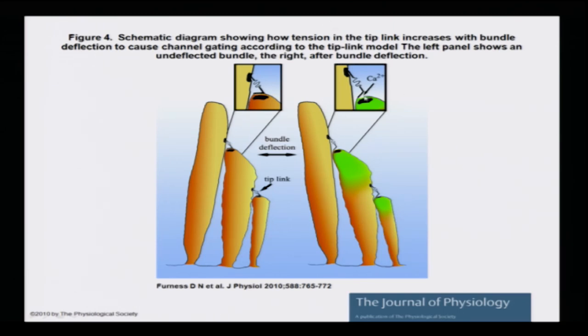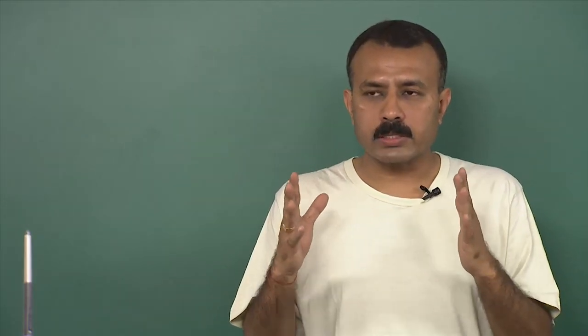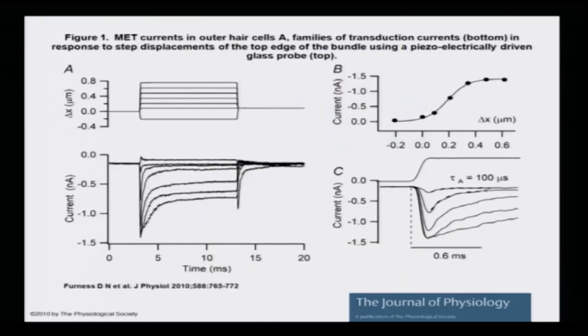This is where the channels are sitting. If they are pulled in one direction, the gate opens and calcium enters. Look at this micrograph very carefully — this is how calcium entry is taking place. It is almost like a hinge of a door: there is a pull to the left and the channel opens. This is why I decided to give you a special lecture with all these figures and schematics, to help you appreciate how this whole process is taking place.